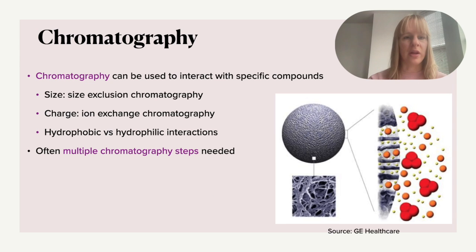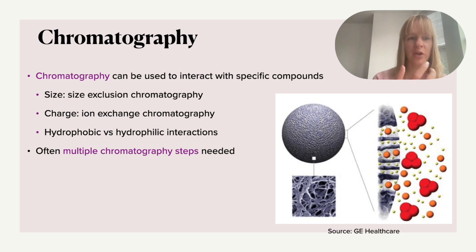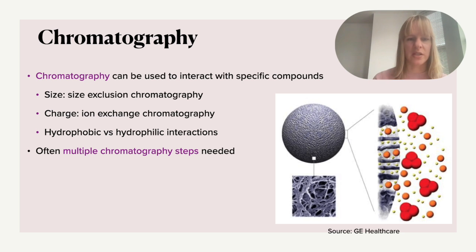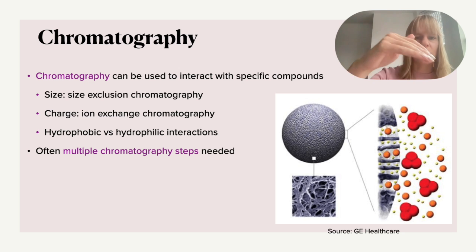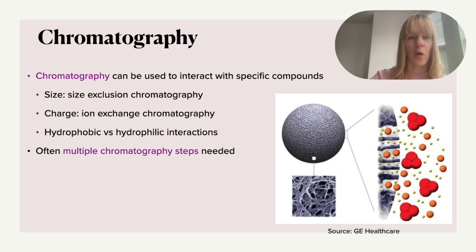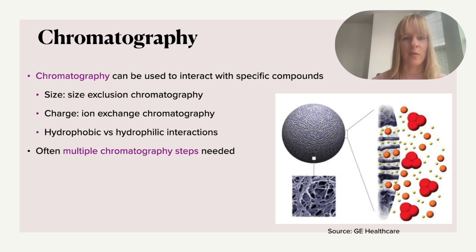Another very common approach for purification is column chromatography. You can use very specific interactions with a resin or beads within your column to interact with specific compounds. Here you see an example based on size: beads have very tiny pores, and smaller compounds can go through the pores and take a very long time to elute off, whereas bigger compounds can't enter the pores and are easily eluted. This difference in retention time is what size exclusion chromatography relies on.